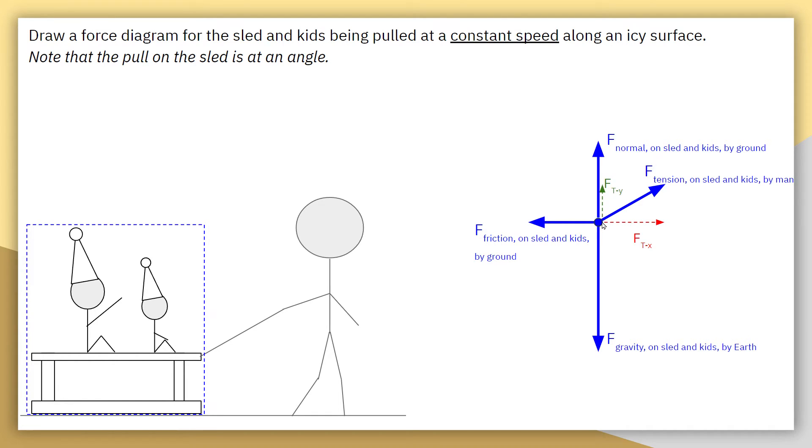That force needs to be applied directly to our system. All of these force vectors need to, well, originate from our system, and then show the direction that the force was applied on the system.